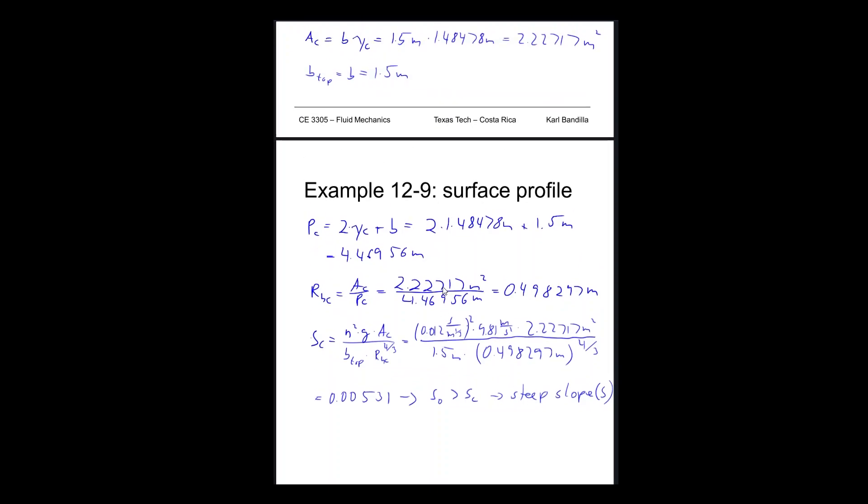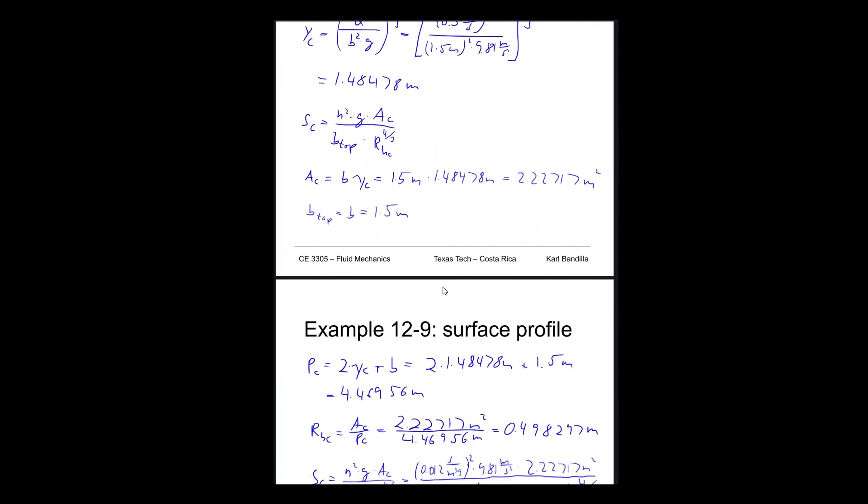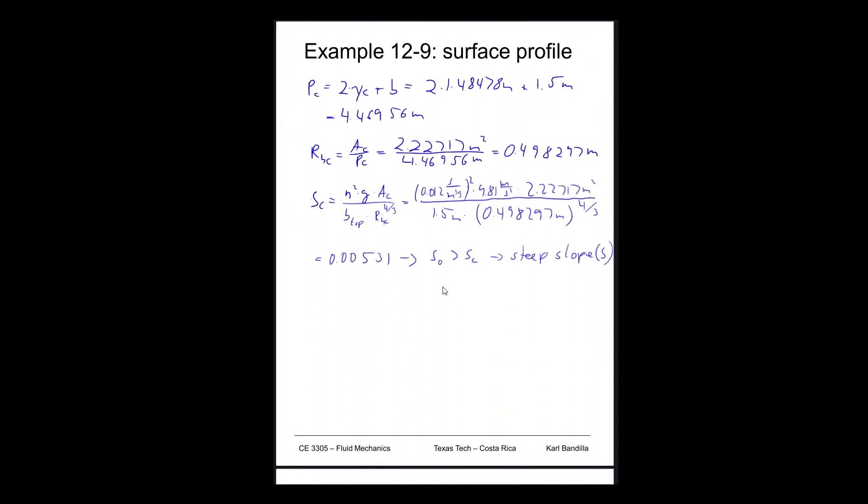Now what we need to find is the regular flow depth, yn. And to do that, we have to go through the entire process that we've done on earlier examples, to find the flow based on the slope and on the flow rate. To do that, we'll have to find our flow area, which is yn times b. We'll need to know what our hydraulic radius and what our wetted perimeter is, 2 times yn plus b.